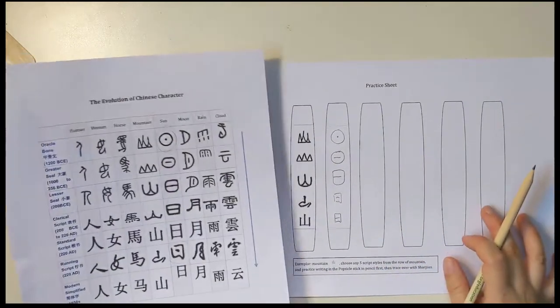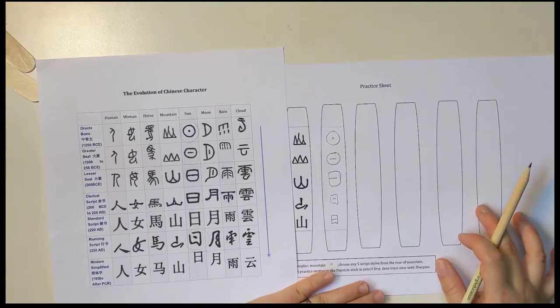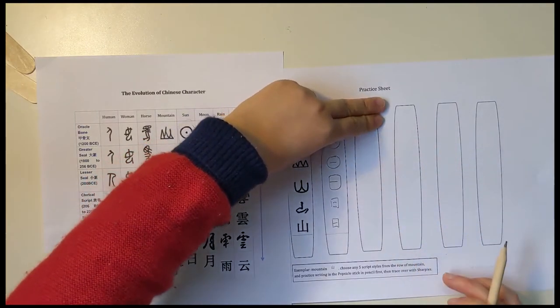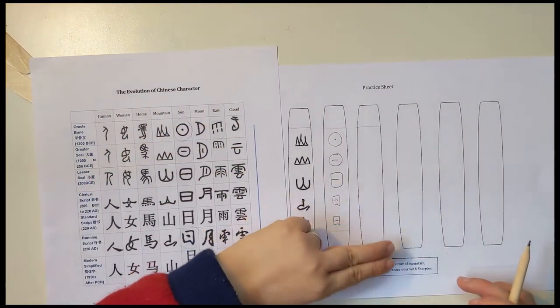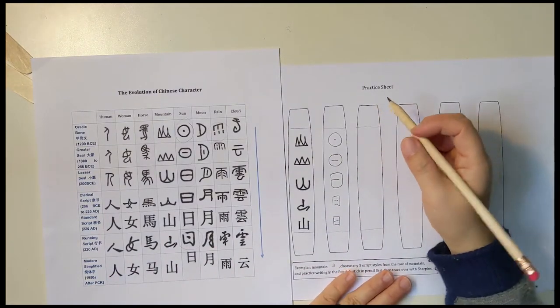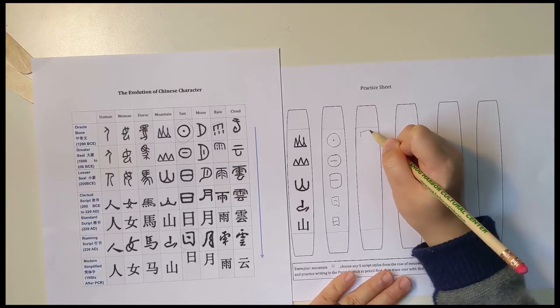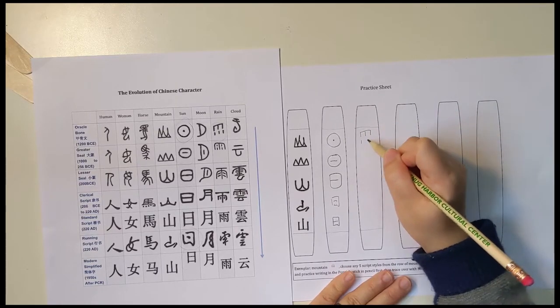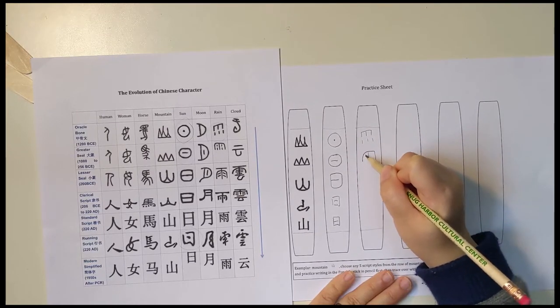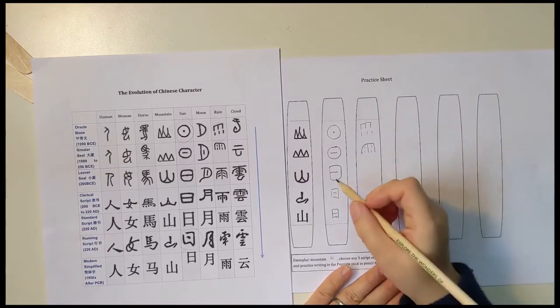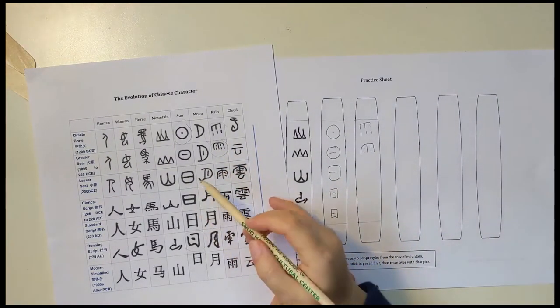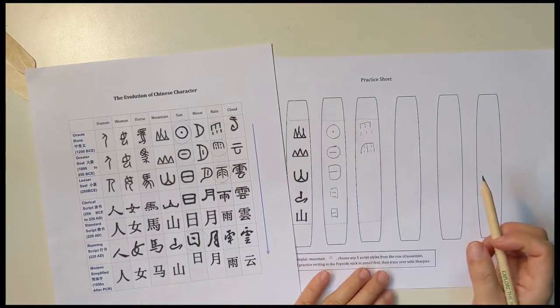And then I will do Rain. I have to measure two fingers on the top of my tongue depressor and two fingers on the bottom. First is the Rain, this is actually the roof. I'm writing the greater seal script.